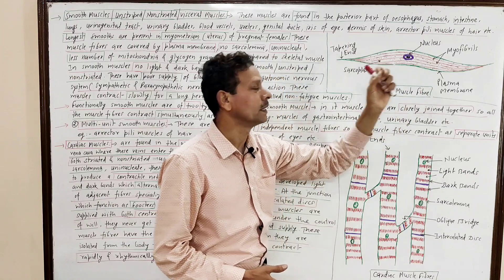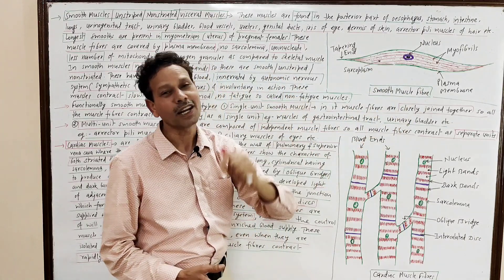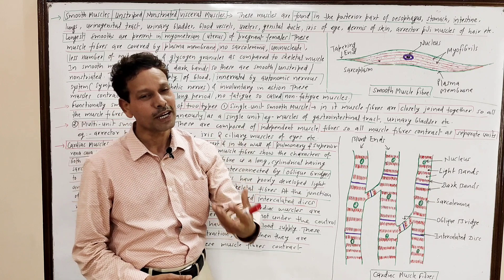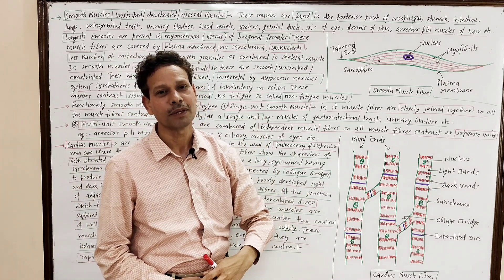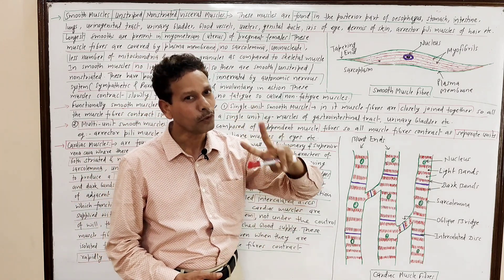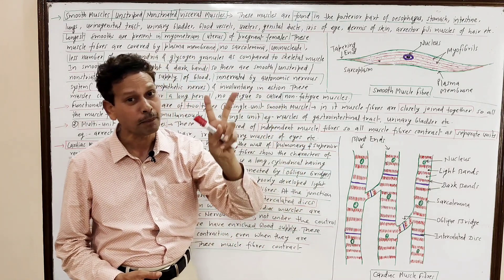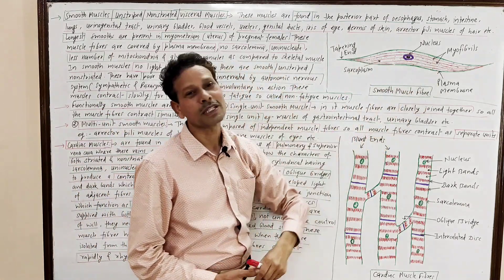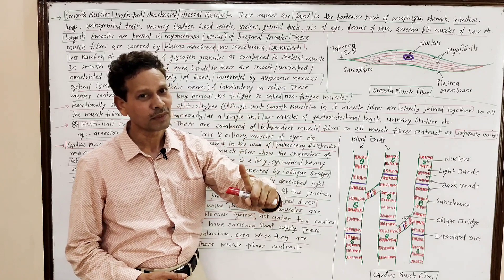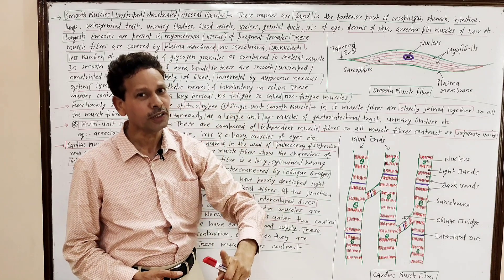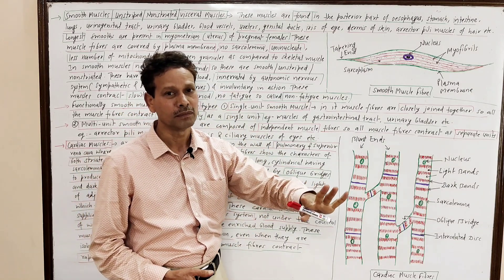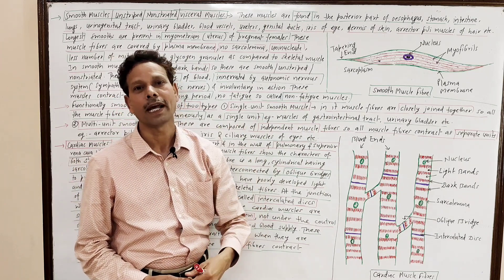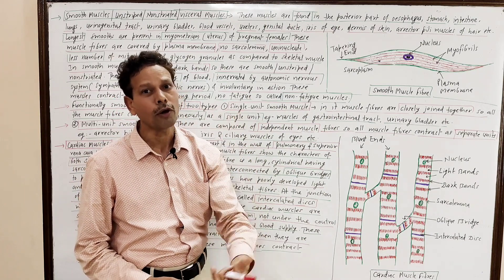These smooth muscle fibers are innervated by the autonomic nervous system — meaning both sympathetic and parasympathetic nerves innervate these smooth muscle fibers. So they function without any involvement of will. These are involuntary in action; these are autonomic in action.